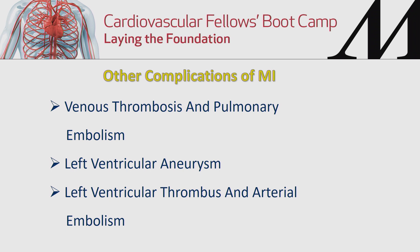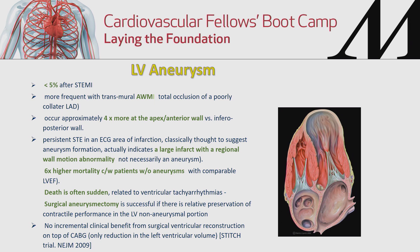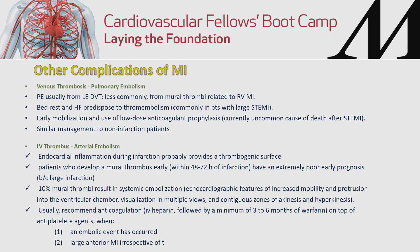Other complications of acute MI include venous thrombosis and pulmonary embolism related to bed rest, LV aneurysm, and LV thrombus. LV aneurysm occurs in less than 5% after myocardial infarction, develops late, and treatment is usually surgical. LV thrombus can occur in larger infarcts with akinesis of the anterior and apical wall, requiring anticoagulation for the first three to six months.